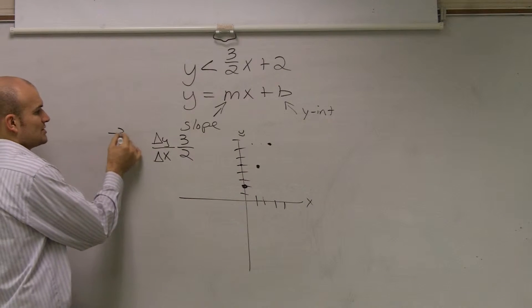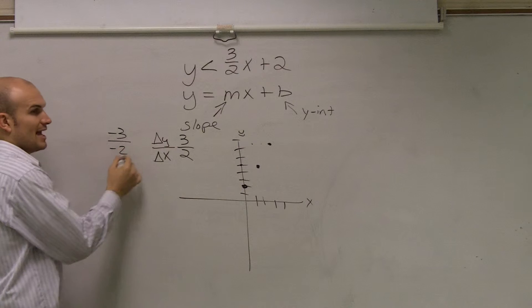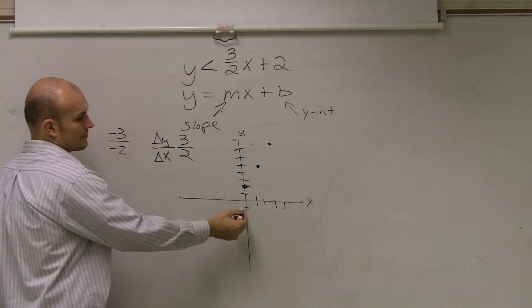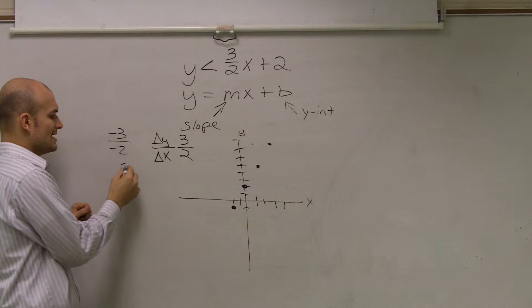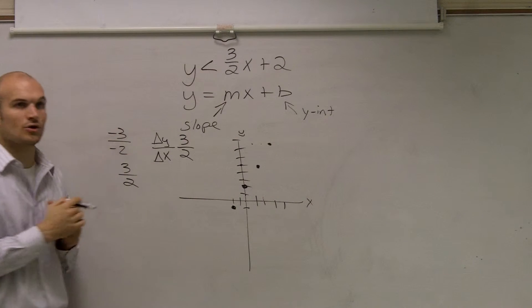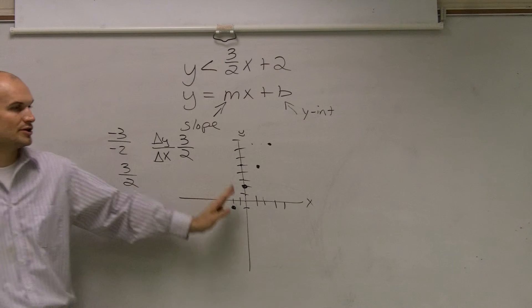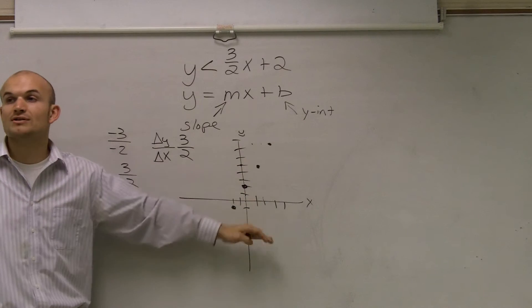Also, remember, you can also do negative 3 and negative 2. Because if you go down 3 and then to the left 2, a negative divided by negative still gives you a positive slope. So just remember, you can go up and to the right if it's positive, or down and to the left.